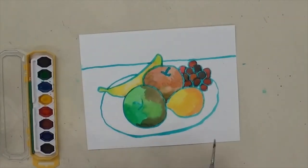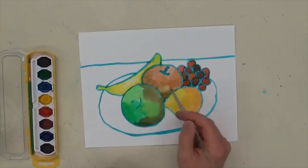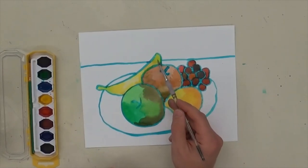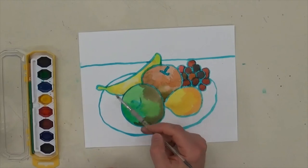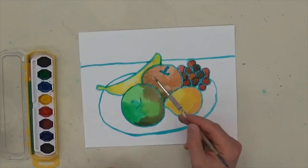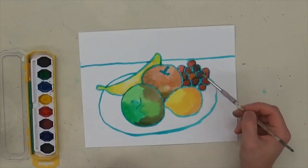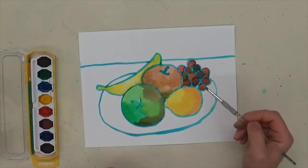So I got my fruit painted in and I painted it in little patches of different colors because I noticed there wasn't just one kind of yellow in the banana. There were different kinds and different kinds of red. The grapes weren't all exactly the same color so I made them a little bit different. And that's kind of how Paul Cezanne paints.